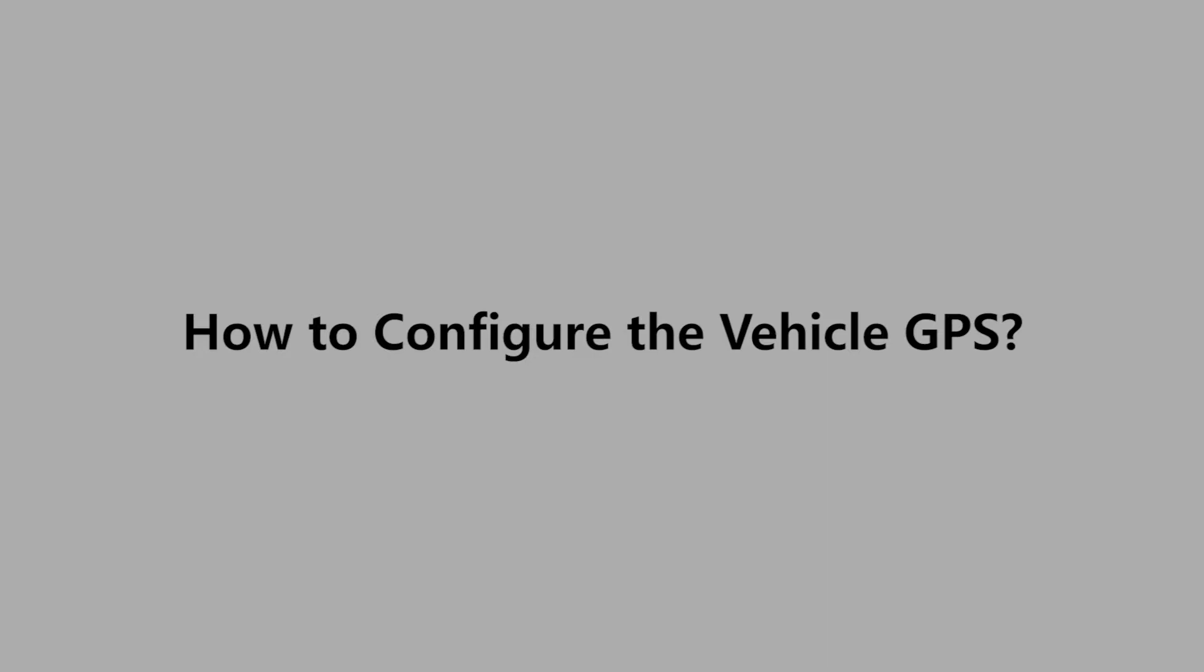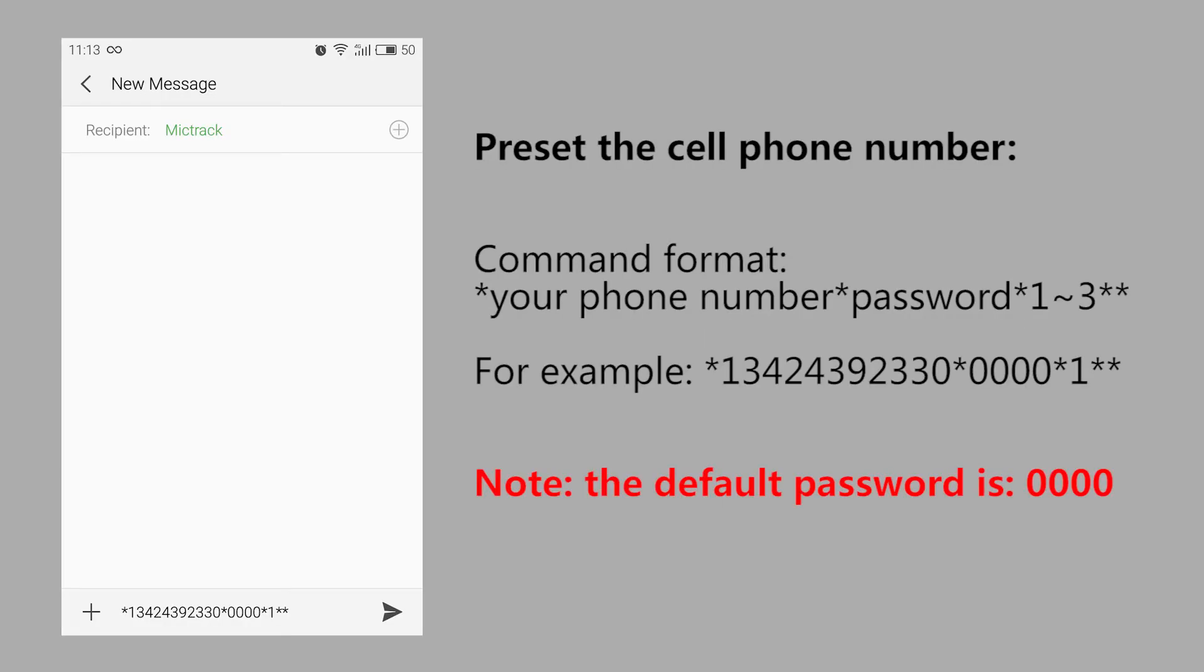You have to configure the device as follows. Using your phone, send the SMS commands to the unit SIM card number. One, preset the cell phone number. Note, the default password is zero zero zero zero.